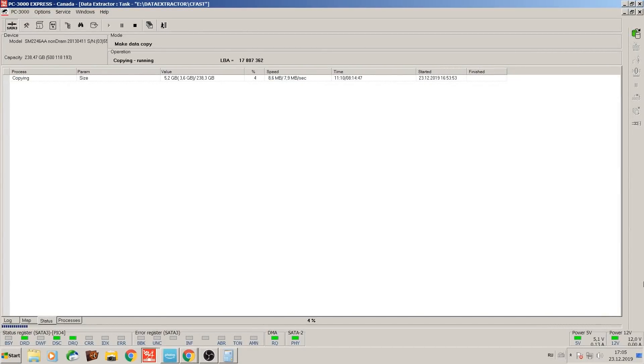It's currently being imaged at about nine megabytes per second, give or take. It's not the crazy fast speed, but again, this is happening all because of PC-3000's ability to build a translator for this device. That's as fast as it's going to go for now, but it's running steady.